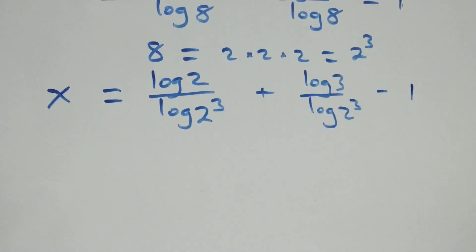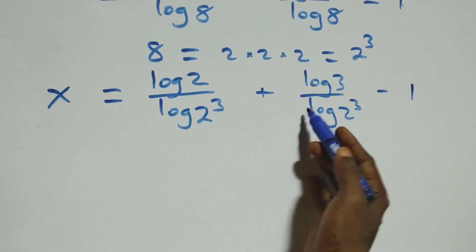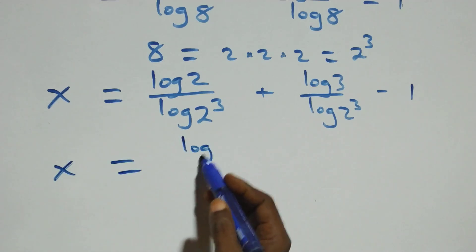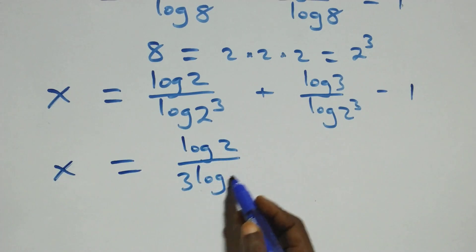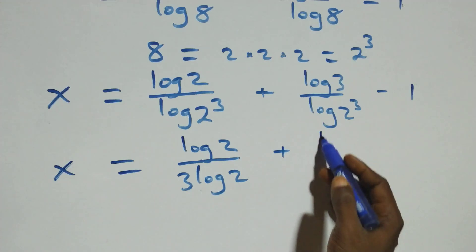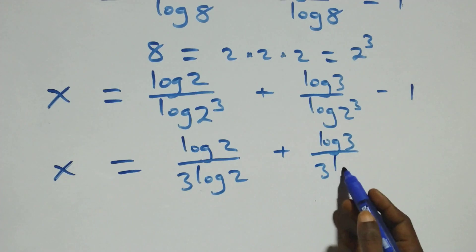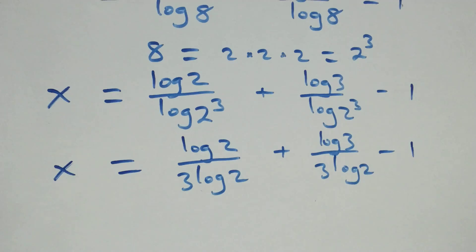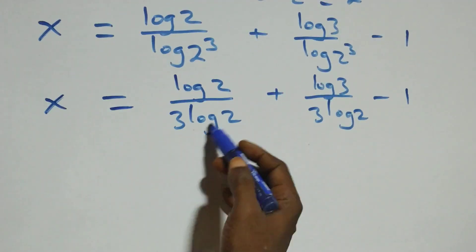Here we apply the power rule of logarithms: 3 comes down. So we have x equals log 2 over 3 log 2, then plus log 3 over 3 log 2, then minus 1. Log 2 cancels each other in the first term, giving us 1 over 3.